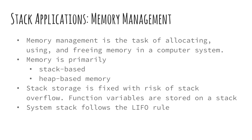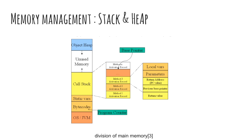Memory management is a task of allocating, using, and freeing memory in computer systems. Memory available to a program is primarily of two types: fixed stack-based memory and dynamic heap-based memory. Stack storage is fixed, which means there can be a risk of stack overflow if too much data is pushed on the stack. The stack used for memory allocation is called a system stack and it follows the LIFO rule. The diagram shows the division of main memory into a fixed portion called stack space and a dynamic portion called heap. Function calls and function variables are stored on the stack, whereas dynamic object creation is done on the heap.